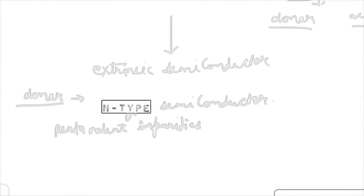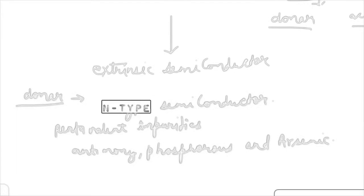The types of pentavalent impurities are antimony, phosphorus, and arsenic. One free electron is available to move inside the crystal. The energy required to detach this fifth electron from the atom is only 0.01 electron volts for germanium and 0.05 electron volts for silicon. These impurities donate an electron carrier and are therefore referred to as donor or n-type impurity.